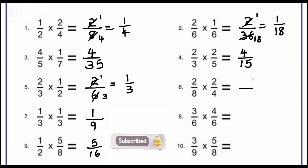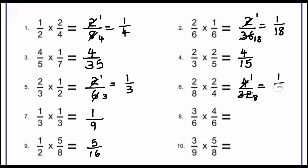The next question gives 4 in the numerator and 32 in the denominator. After simplifying 4/32 by dividing by 4 — 4 ÷ 4 = 1 and 32 ÷ 4 = 8 — our final answer is 1/8. The following question gives 12 in the numerator and 36 in the denominator. Simplifying 12/36 by dividing by 12 gives 1/3 as the final answer.